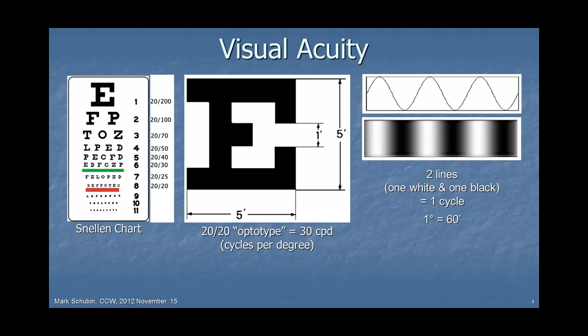All of this is based supposedly on visual acuity. The familiar eye chart you see at the ophthalmologist is called a Snellen chart, named after a Dutch ophthalmologist from the 19th century. He came up with the optotypes — the characters on this chart — in 1862. Based on his work, normal vision is 20-20, and that works out to 30 cycles per degree, because every feature on the optotype subtends one arc minute when viewed from the appropriate distance. An arc minute is a 60th of a degree. A cycle has a bright part and a dark part, so 30 cycles per degree for normal 20-20 vision.